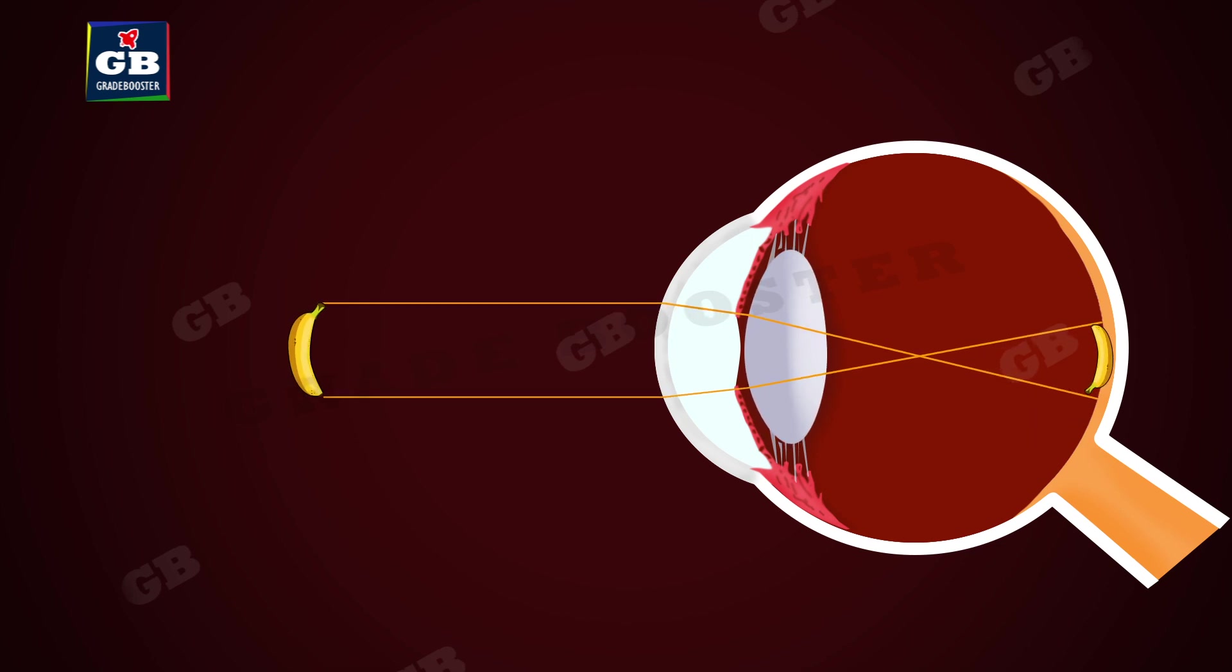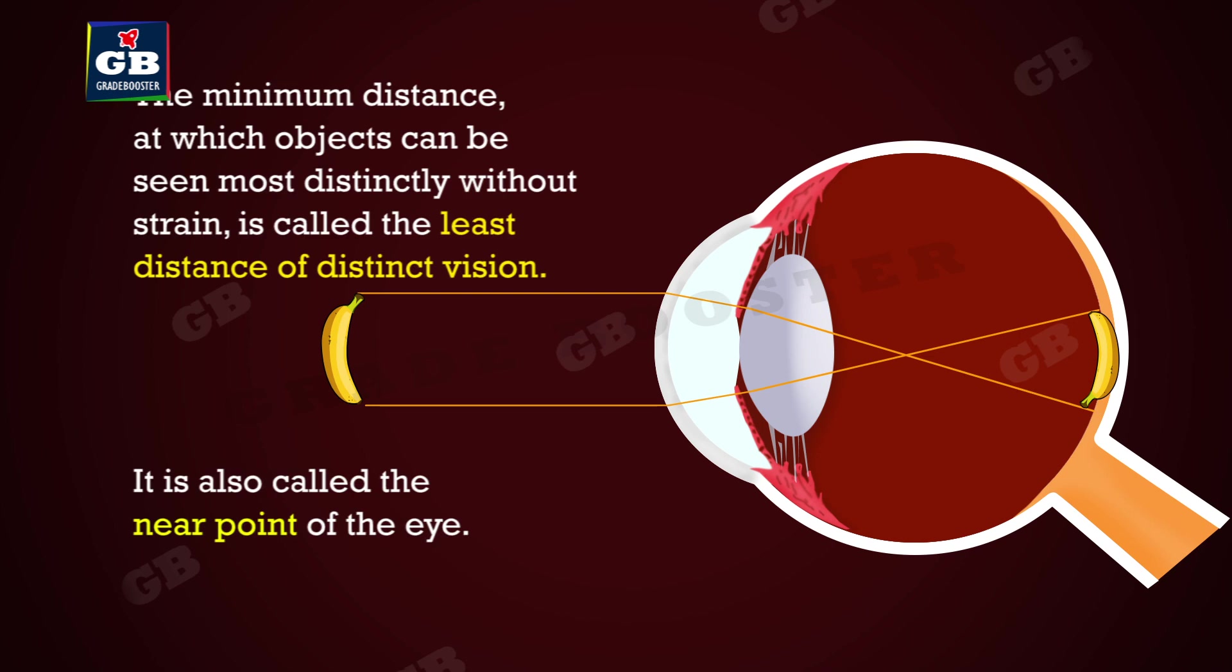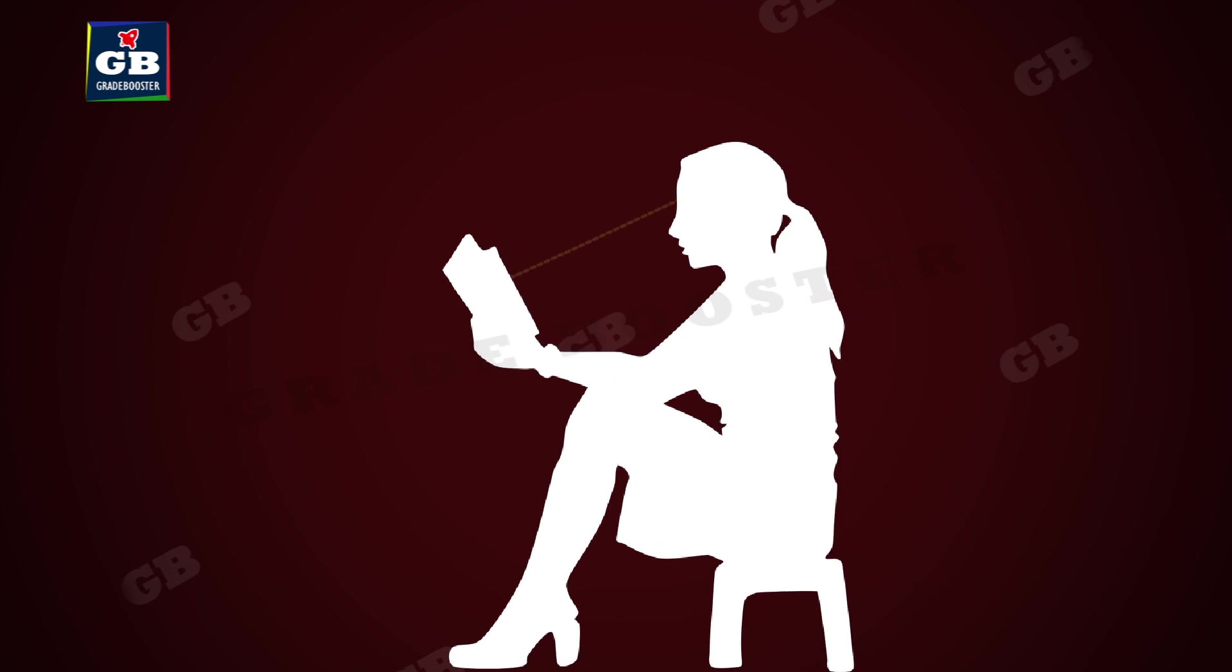But there is a limit up to which the focal length of the eye can be adjusted. The minimum distance at which objects can be seen most distinctly without strain is called the least distance of distinct vision. It is also called the near point of the eye. For a young adult with normal vision, the near point is about 25 centimeters.